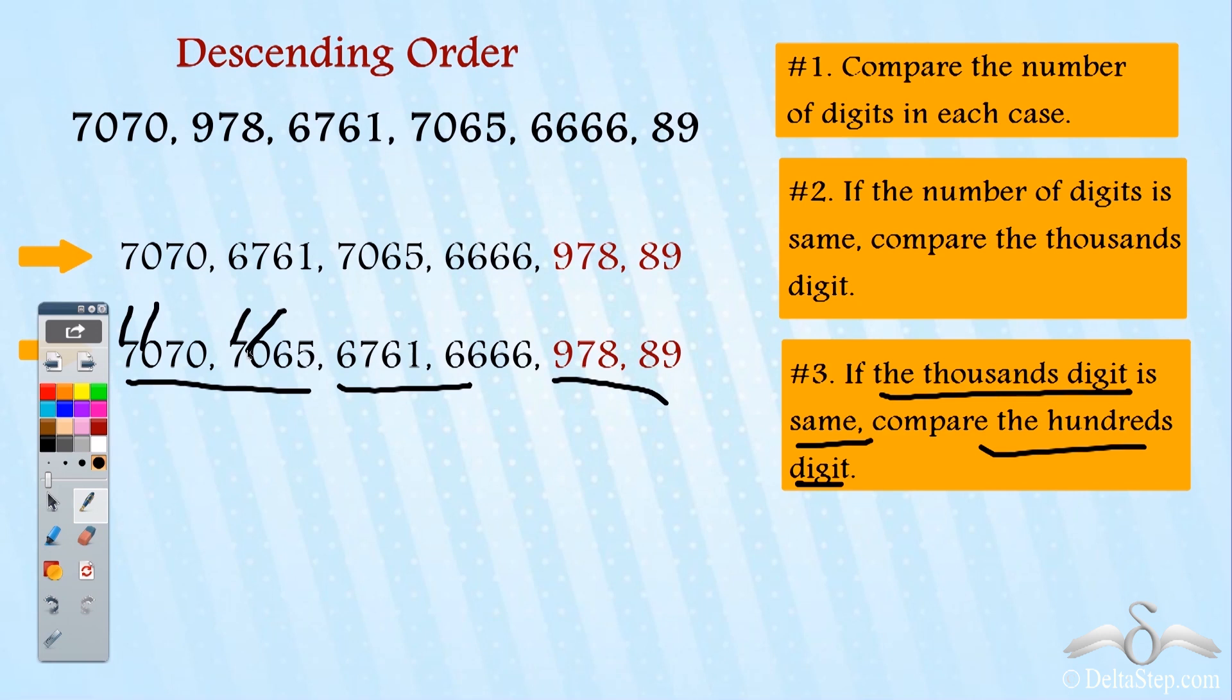I look at these two. My thousands digit is same but hundreds digit over here is seven and over here is six. Seven is greater than six. So this will come before this because this is descending order.